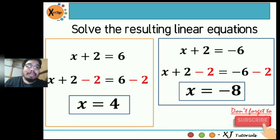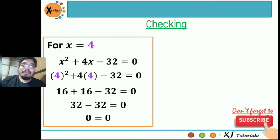The 2 on the left side cancels. Negative 6 minus 2 is negative 8. So x equals negative 8. Let's do the checking.